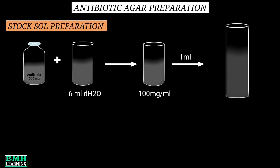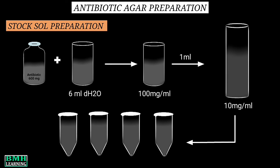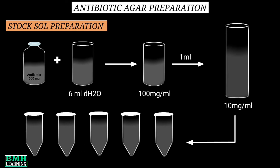The tube contains 9 ml of distilled water, giving a concentration of 10 mg per ml. From this 10 mg per ml dilution, we make 1 ml aliquots — each having the same concentration of 10 mg per ml. Remember to mark the aliquots with the antibiotic concentration, date of preparation, and expiry date. Store these aliquots at minus 60 degrees centigrade.